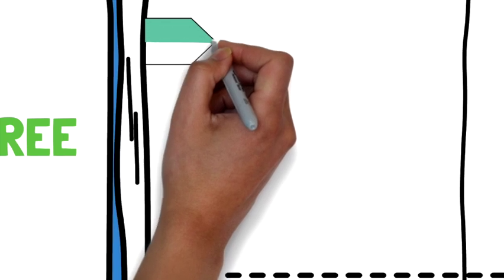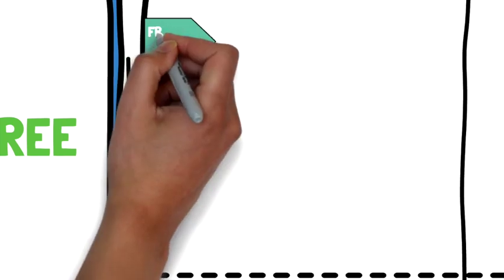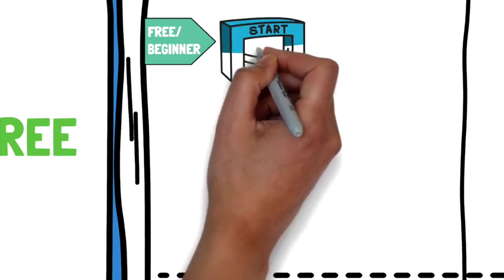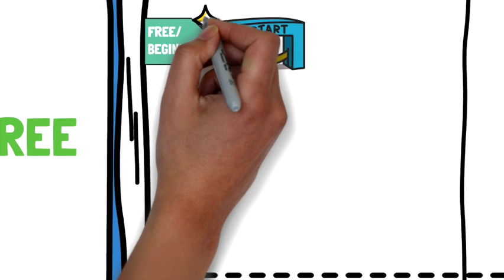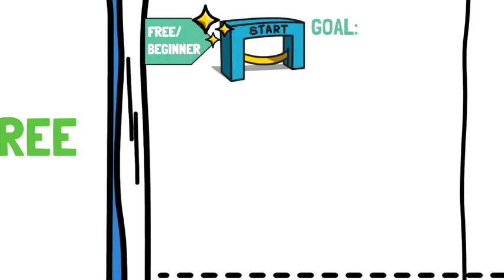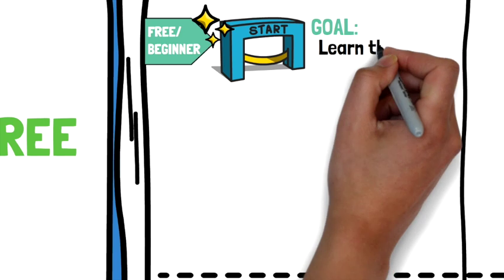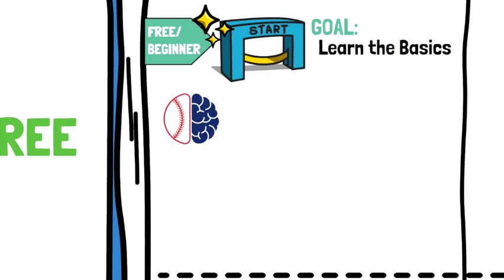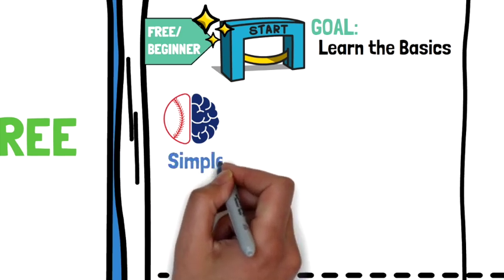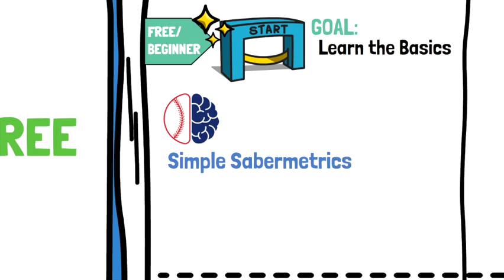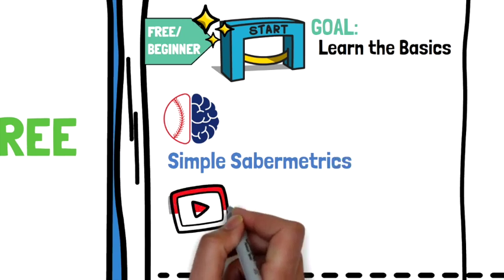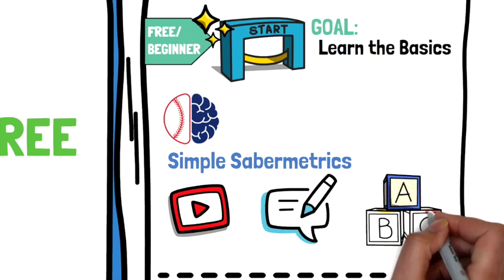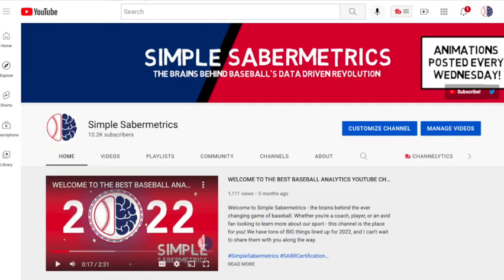First we'll be looking at the best free information available for beginners. If you're just getting started, these sites are going to be the best place for you — they don't cost a dime. The goal is to learn the basics, so the content is typically a little easier to consume. The first place I'd recommend checking out is this awesome YouTube channel called Simple Sabermetrics — yes, that is the channel you're currently watching. We even have a blog too, and it is one of the best places on the internet to learn more about the advancements going on today in our sport, as well as the practical applications of that information.